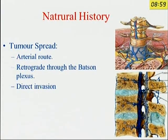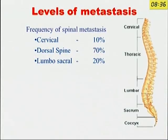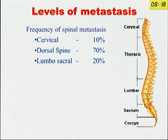This tumor spreads mostly by arterial route, and retrograde spread through the Batson plexus is also very common with prostate cancer. Direct invasion can occur from the lung or any posterior structures like the kidney or pancreas. The cervical spine is involved in 10 percent of cases, and most cases will be in the dorsal spine because of its proximity to visceral structures like lung, pancreas, and kidney.